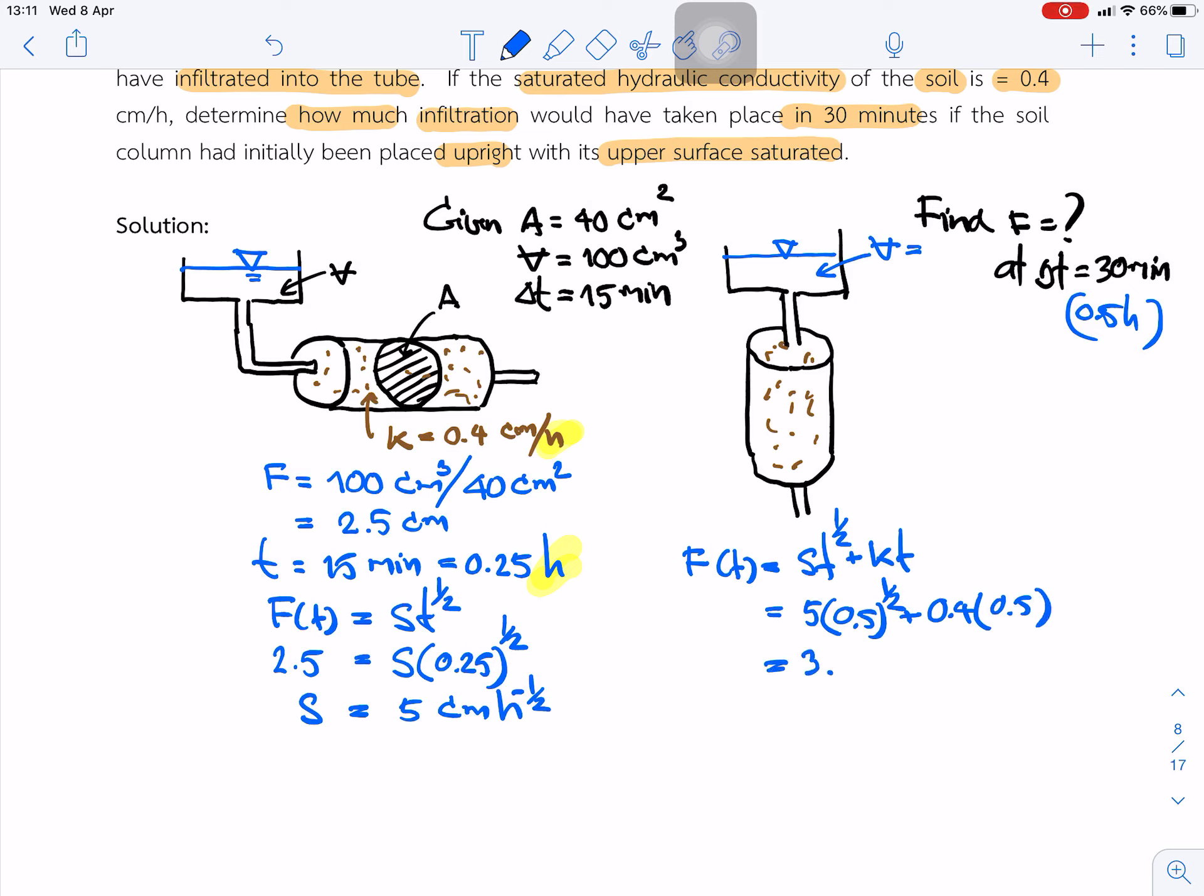We got 3.74 cm. The cumulative depth of the infiltration is 3.74 cm.